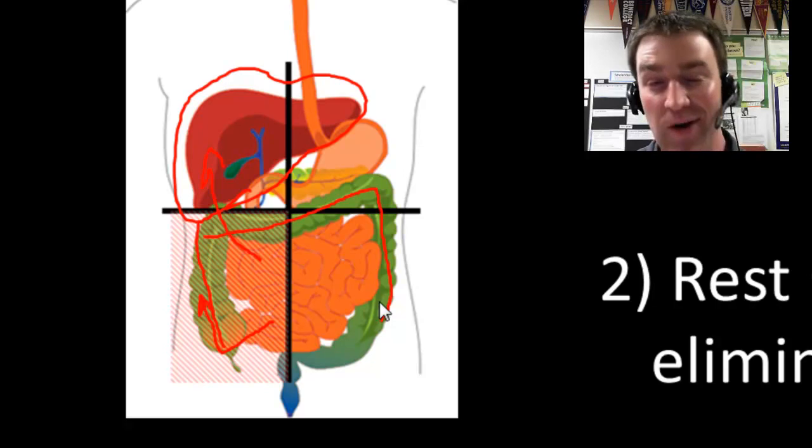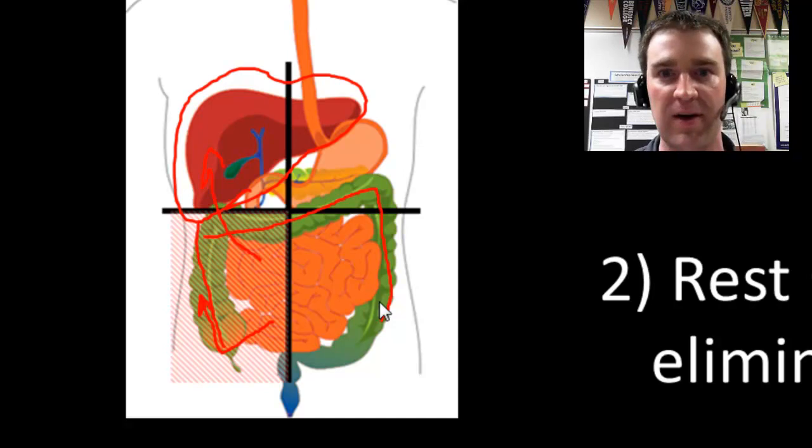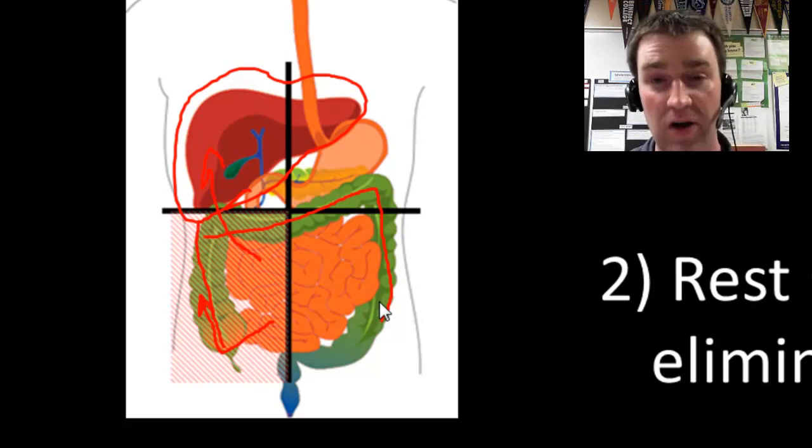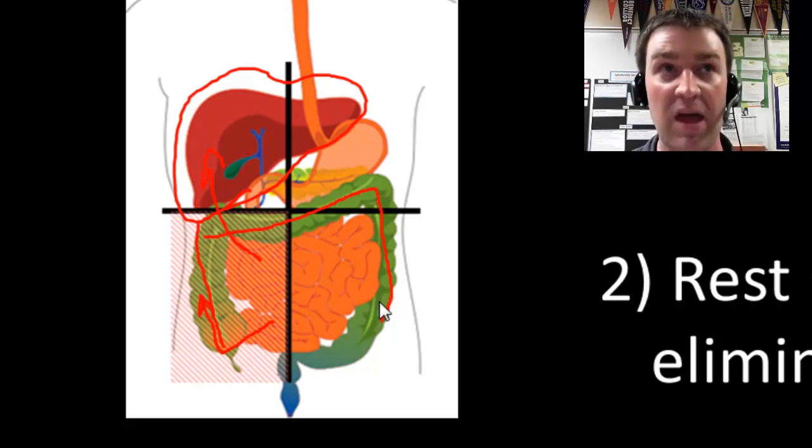If you've ever had diarrhea before, that can be a case where your colon is irritated for whatever reason and you're not reabsorbing that water. Besides being kind of gross, it can also be extremely dangerous. Diarrhea is often the leading cause of death, especially in areas of the world where there's poor sanitation. They simply just don't have enough access to water to rehydrate themselves, and so they tragically die. The large intestine is extremely important in that regard.